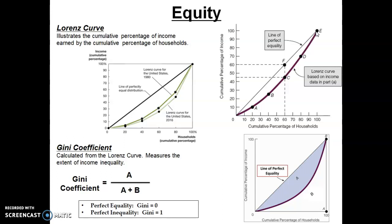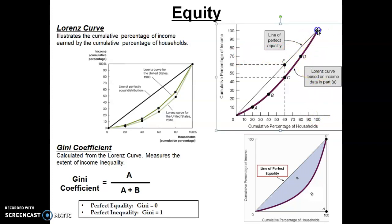If this 45-degree line of perfect equality were the actual income distribution in a nation, every household would have the same income. However, that's not the case in any country. So we illustrate with the Lorenz curve the actual distribution of income. In this hypothetical example, 20% of households get 10% of income (point A), 40% get 25% (point B), 60% get 45% (point C), 80% get about 70% (point D), and 100% of households get 100% of income (point E).